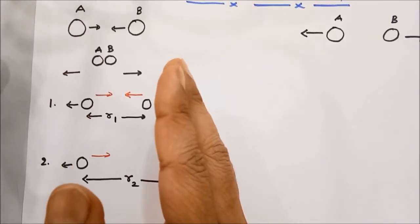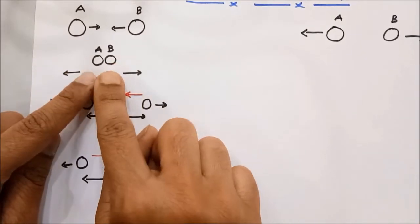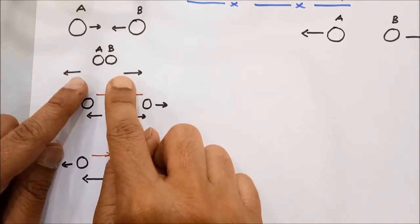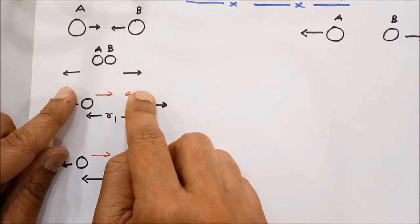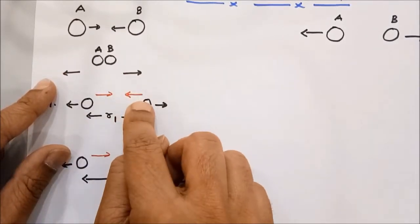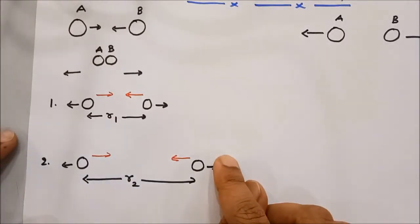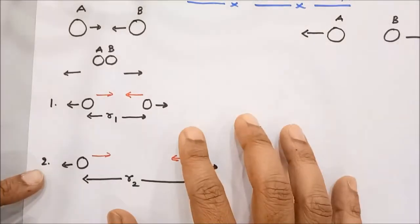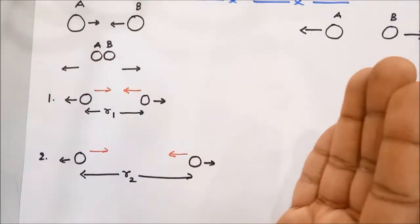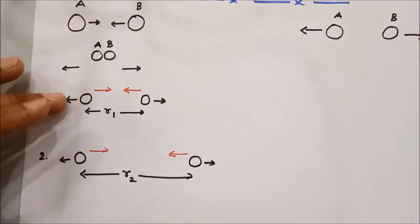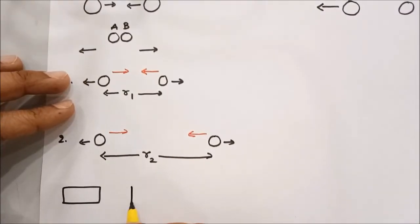Let us recapitulate what we have done. There are two objects which are attracting, so they want to come nearer, but I am exerting a force in the opposite direction. The work done by me during this process is stored in the system in the form of potential energy. So the more you bring them apart, the more is the potential energy stored in the system. A very fine application of this is solids, liquids, and gases.